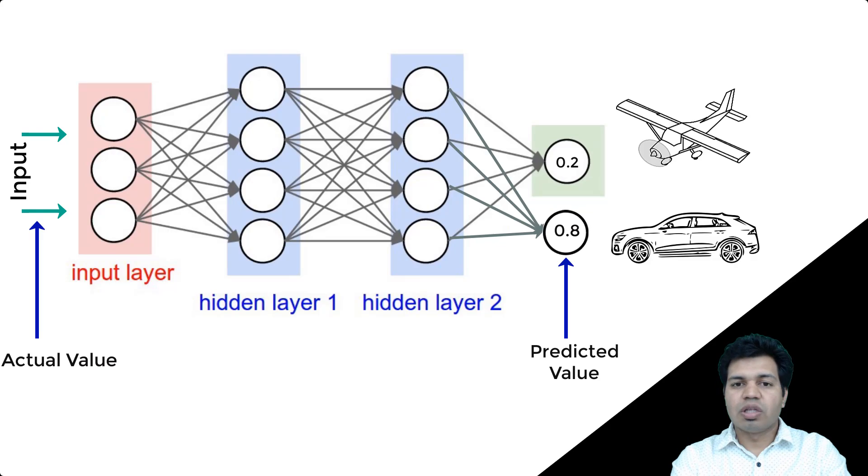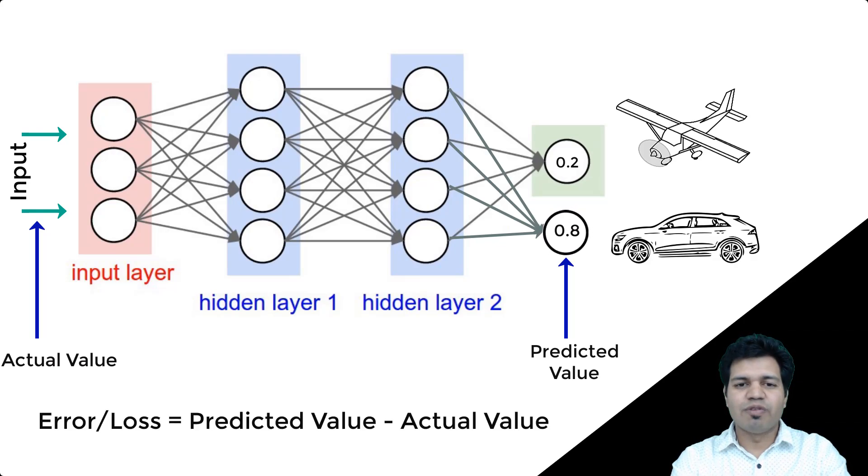We calculate the loss or error on the output value received—that is, we calculate the difference between the predicted value of the output for a given input and the actual value or label. We then minimize this loss function or error using stochastic gradient descent—that is, taking the derivative of loss with respect to weight in the model. Backpropagation comes into picture at this point onwards.